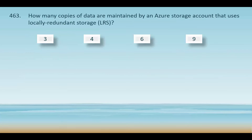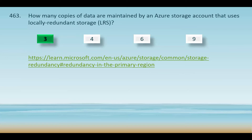How many copies of data are maintained by an Azure storage account that uses locally redundant storage? Your options are 3, 4, 6, and 9. When an Azure storage account uses locally redundant storage, it maintains 3 copies of the data. These copies are stored within a single data center in the same Azure region to ensure high availability and durability. However, LRS only protects against hardware failures within the data center and does not provide redundancy across regions or data centers. For higher redundancy, zone-redundant storage or geo-redundant storage would be needed.